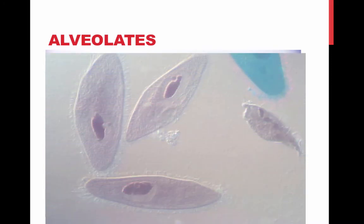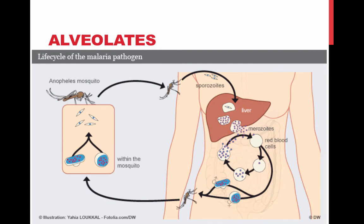Apicomplexans are parasites of animals, and some can cause serious human disease. Specifically, Plasmodium is the parasite that causes malaria. Malaria is the most deadly infectious disease in the world — it kills millions of people every year, more than AIDS.